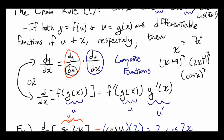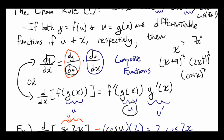This notation is the same thing as before. Why? You have the derivative with respect to x of the entire function, and it equals the derivative of f with respect to u.